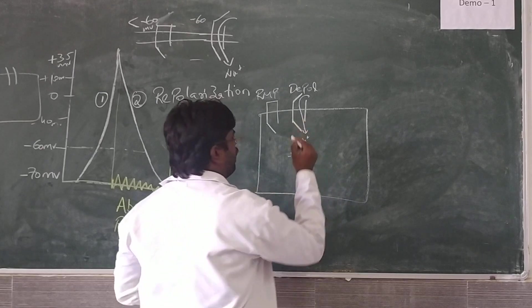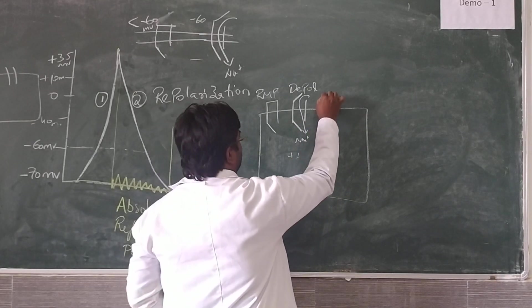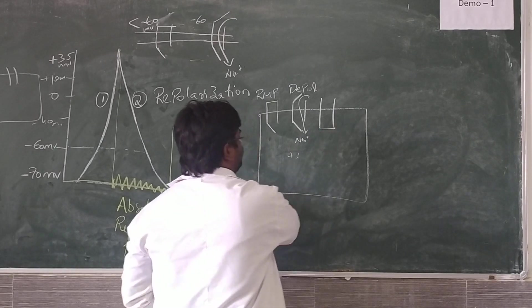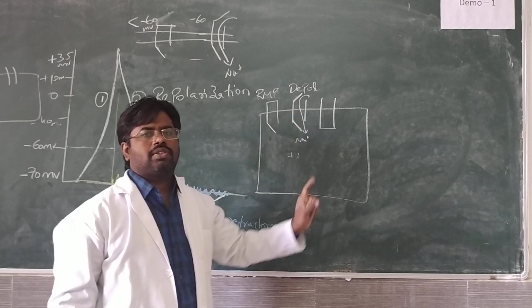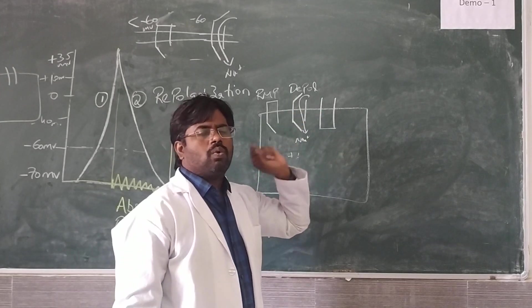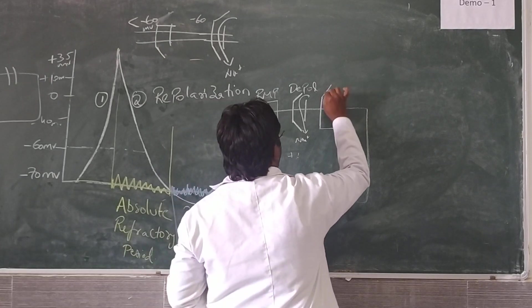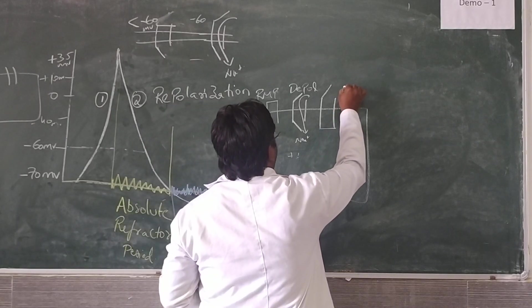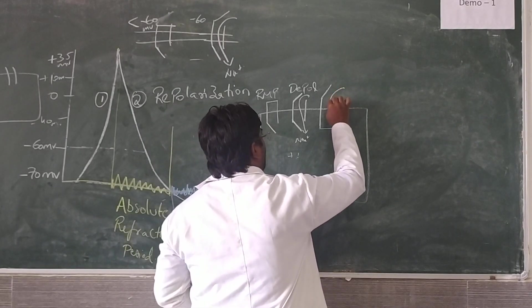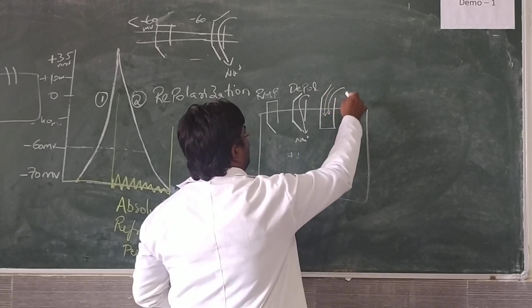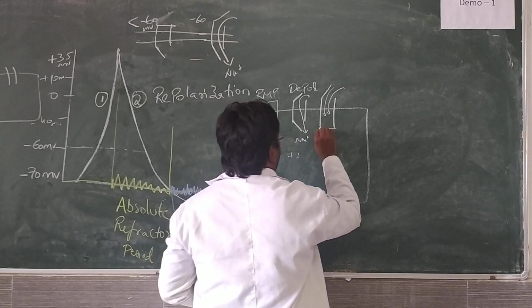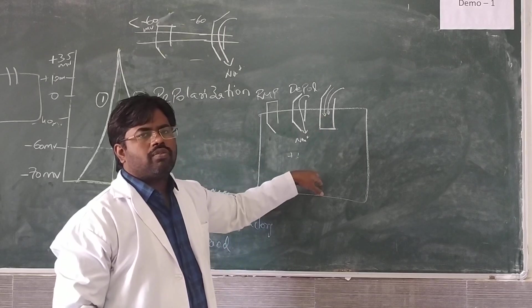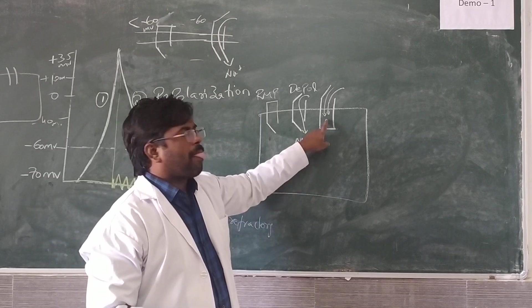When it reaches the equilibrium potential, that is plus 35 millivolts, the inactive gates will be closed. The inactive gates will be closed and the active gates will remain open. This means the sodium ions are abundant in the extracellular fluid. Even though a lot of sodium ions are present and trying to enter inside the cell, due to closure of the inactive gates there is no further entry of sodium ions.